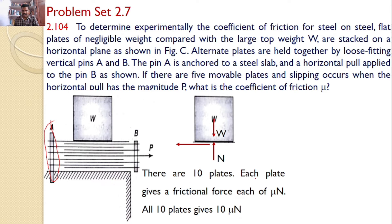There are 10 plates and each plate has a frictional force mu times n. The normal reaction is n and the frictional force is mu times n. All are steel plates and the friction force between each pair of plates is the same. Adding all of them together, you get a total force of 10 mu times n.